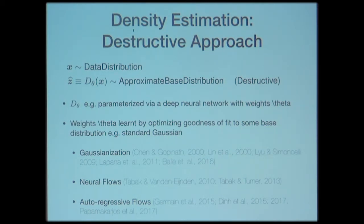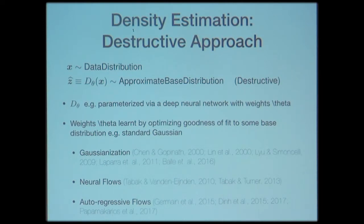Specifically in the early 2000s, people studied this and called it Gaussianization — you take a given random vector and come up with a transformation that converts it to a Gaussian random vector. There's a whole body of work, including projection pursuit literature from the 80s, addressing how to transform a given random vector to make it look like a Gaussian. Recently, people have started using deep neural networks to come up with these transformations.